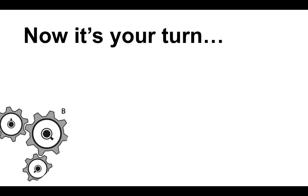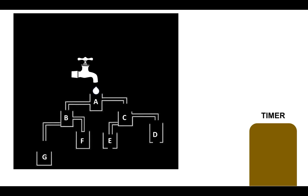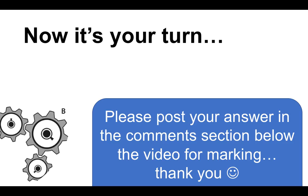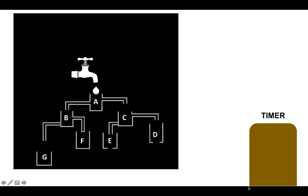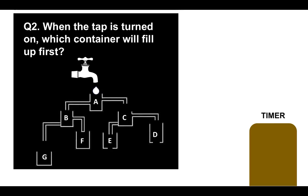Now it's your turn. We're going to do question two, but I'd like you to post your answer in the comments section below for marking — I'll come on each day and mark it. There is a timer on each question and you've got about 12 seconds per question to have a go. Question two: when the tap is turned on, which container will fill up first? You have to look at all of the containers and the configuration — which ones have holes, which ones don't — and determine which one is going to fill up first. Is it A, B, C, D, E, F, or G?